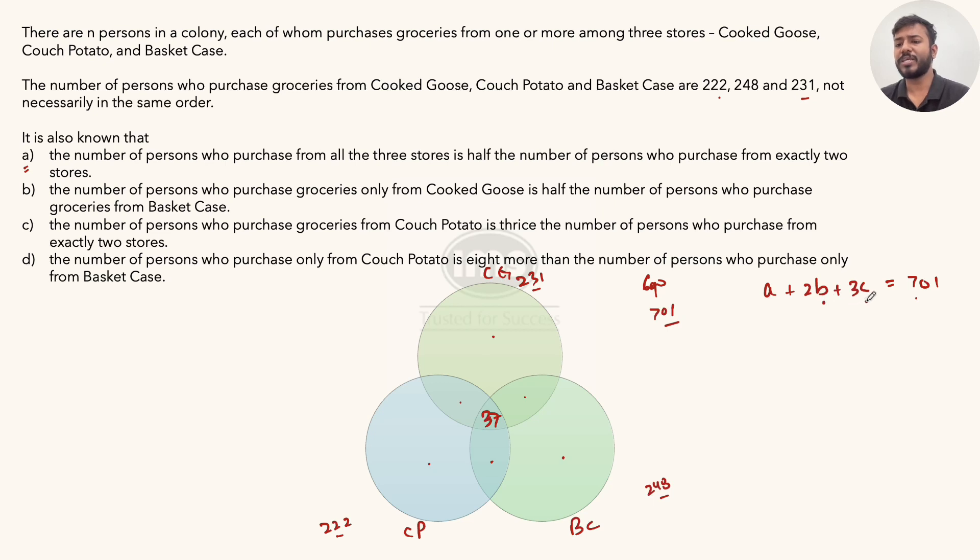Now in this, you know b and you know c. So exactly one can be figured out. A plus 2 times exactly two (74), so 2 times 74 plus 3 times the middle value (37) equals 701. So a plus 148 plus 111 equals 701. This adds up to 259, and difference is 701. So a is 442. So 442 would be the value of exactly one.